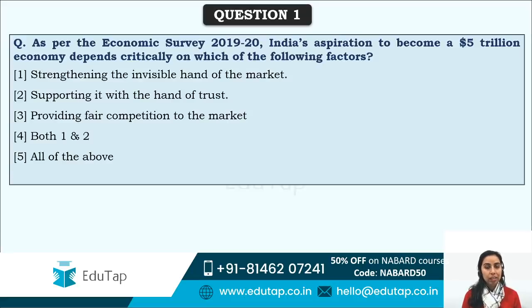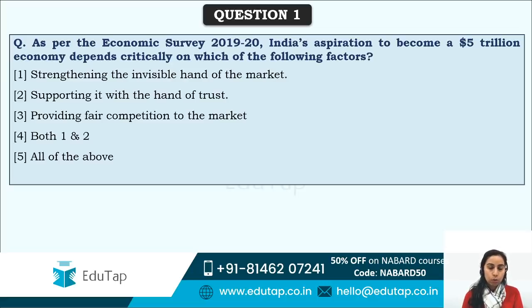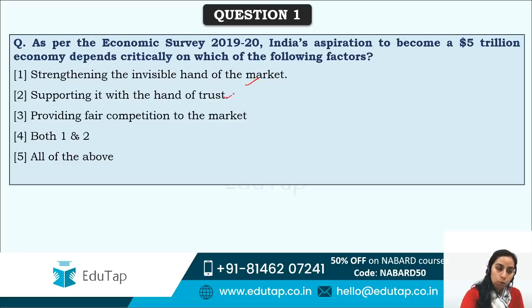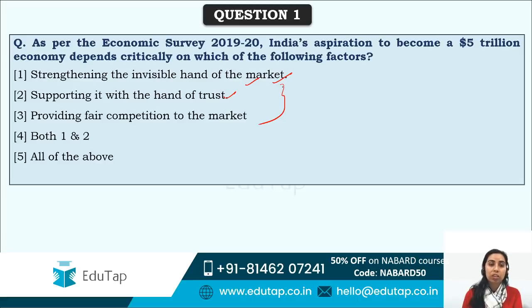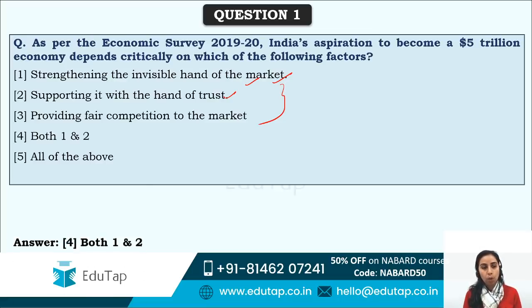Moving to the questions: as per Economic Survey 2019-20, India's aspiration to become a $5 trillion economy depends critically on which factors? Options include: strengthening the invisible hand of the market, supporting it with the hand of trust, and providing fair competition. The answer is options 1 and 2. The Economic Survey explicitly states that the invisible hand of the market needs to be strengthened and supported with the hand of trust.